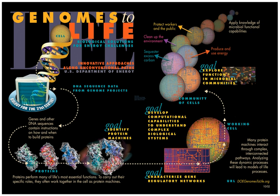The systems biology approach often involves the development of mechanistic models, such as the reconstruction of dynamic systems from the quantitative properties of their elementary building blocks. For instance, a cellular network can be modeled mathematically using methods coming from chemical kinetics and control theory. Due to the large number of parameters, variables and constraints in cellular networks, numerical and computational techniques are often used, e.g., flux balance analysis.